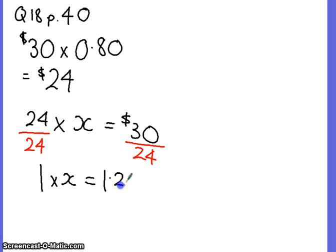So 24 divided by 24 gives us 1 times X equals, what's 30 divided by 24? 1.25. What are you noticing?